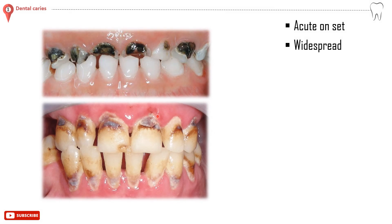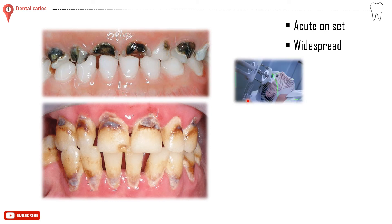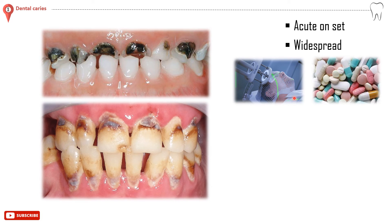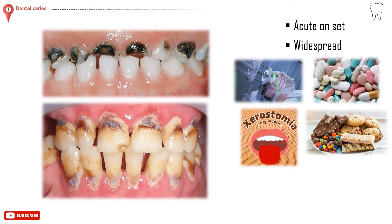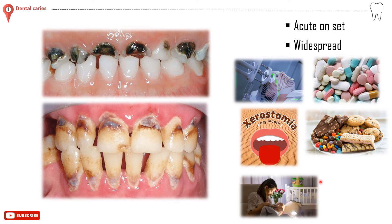Rampant or nursing caries is a suddenly appearing or acute onset, widely spreading caries that may involve many or all erupted teeth, resulting in early pulp involvement, in which more than 10 new lesions appear every year on healthy tooth surfaces which are generally immune to caries. It is usually seen in children and can appear in adults as well. It is mostly due to radiation therapy around the head, use of certain medications such as tranquilizers, xerostomia, sugar-loaded dietary habits, nursing overnight without cleaning the teeth afterwards, and the use of sweetened pacifiers.